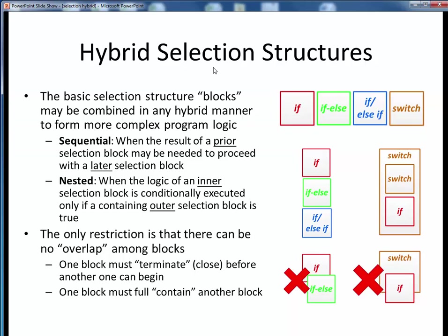There are two fundamental forms of hybrid selection logic. The first one shown here represents sequential selection, in which some individual selection logic is completed before proceeding to the next set of selection logic. Although these blocks may or may not be logically interconnected, it's also possible that the results of some prior selection block are needed before we can proceed with a later selection block.